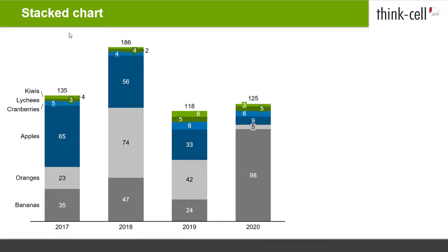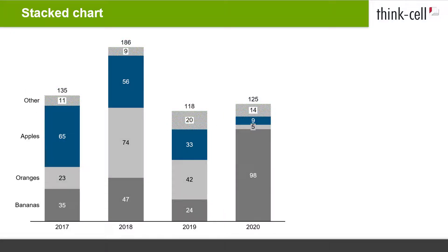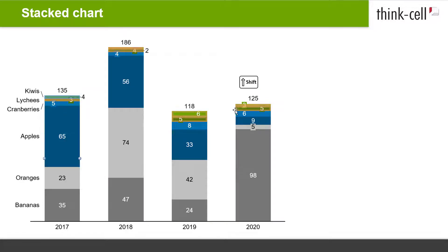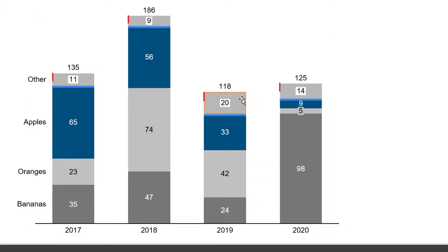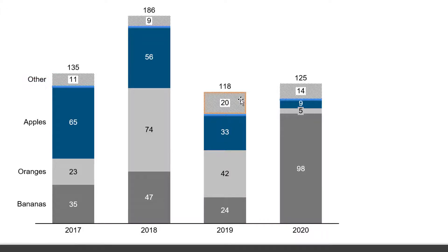Suppose you have a stacked chart with a number of small segments in a category and you would like to combine them into one segment for Other, to make the chart more accessible at a glance. You can do this in just a few clicks. Select all segments that you would like to combine in the Other series, for example by Shift-clicking on them. Then right-click into the selection and choose Move to Other Series from the context menu. The selected segments are combined into one for each category, given a new fill color, and the corresponding series label is changed to Other. Once you have added an Other series, you can also include additional segments in it or exclude segments that should be displayed individually again, by selecting one of the segments from Other and dragging the handle that appears up or down.